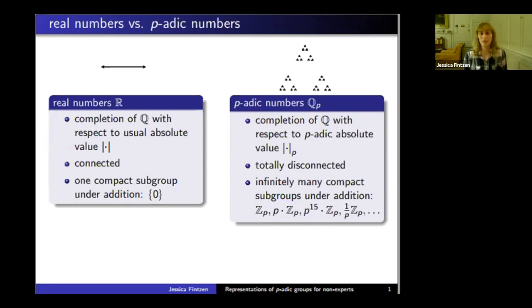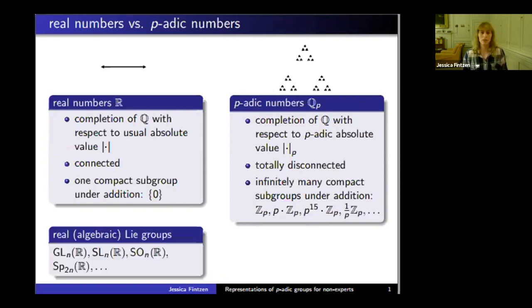I promised to tell you what p-adic groups are. First, recall what Lie groups are—real algebraic Lie groups. They are, for example, GL_n over the real numbers, SL_n (matrices with determinant one), SO_n (those that preserve an inner product), or SP_2n (those that preserve a symplectic form).